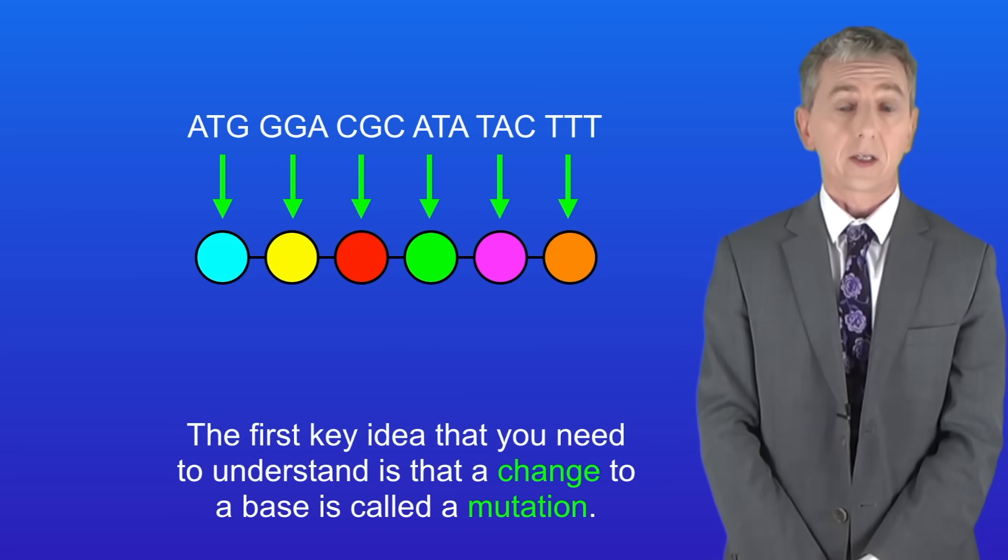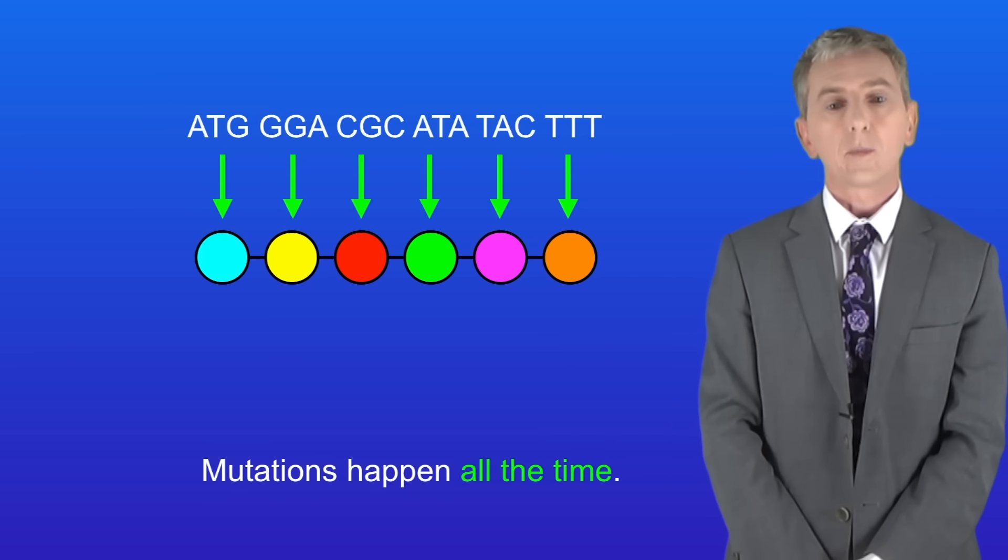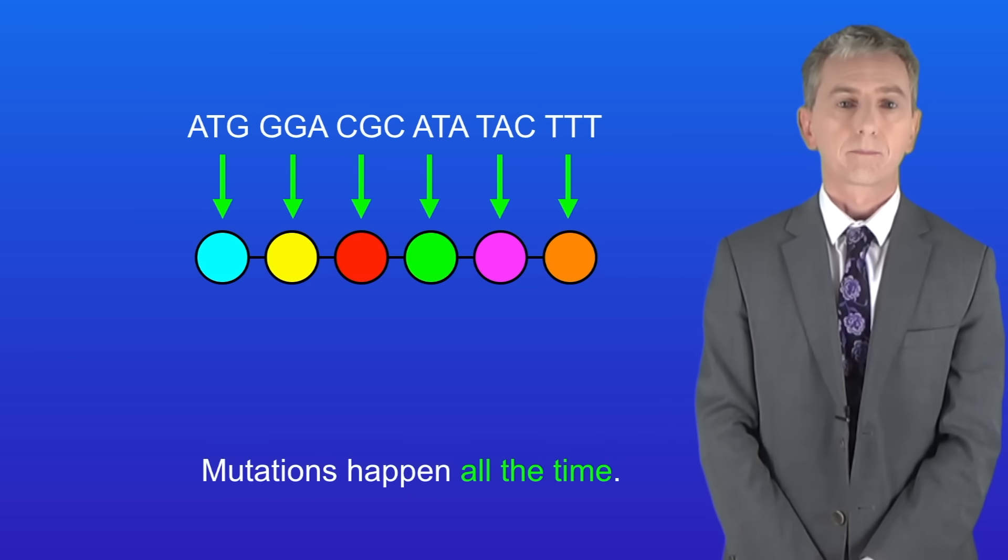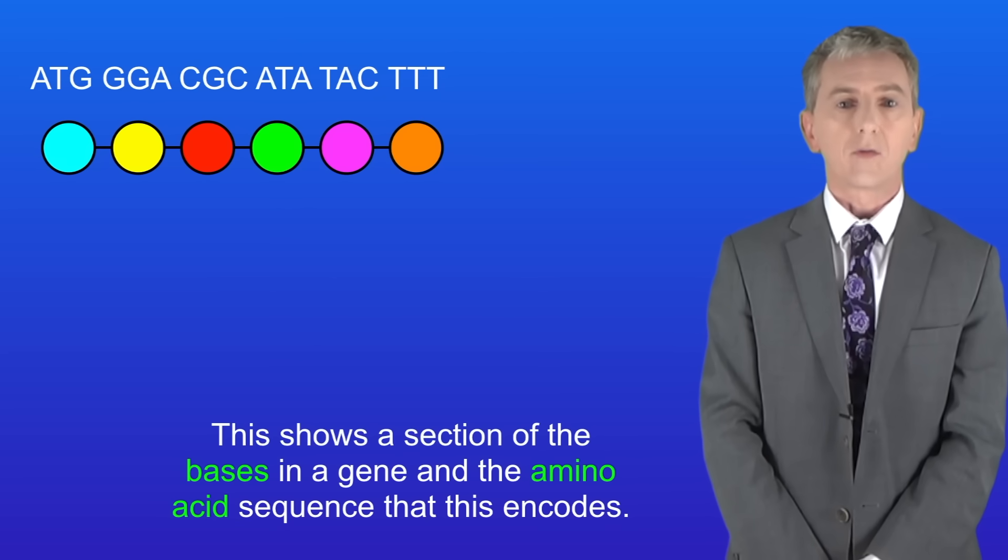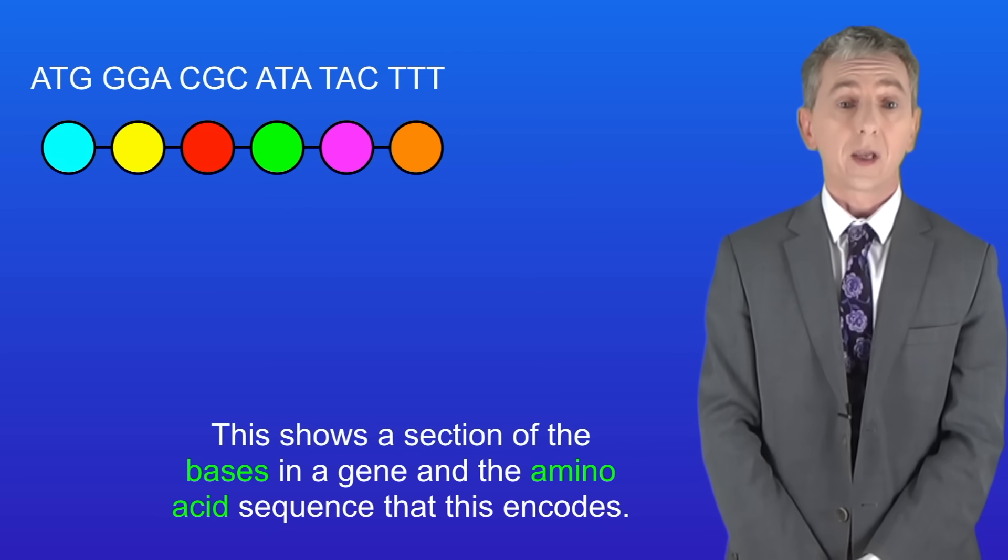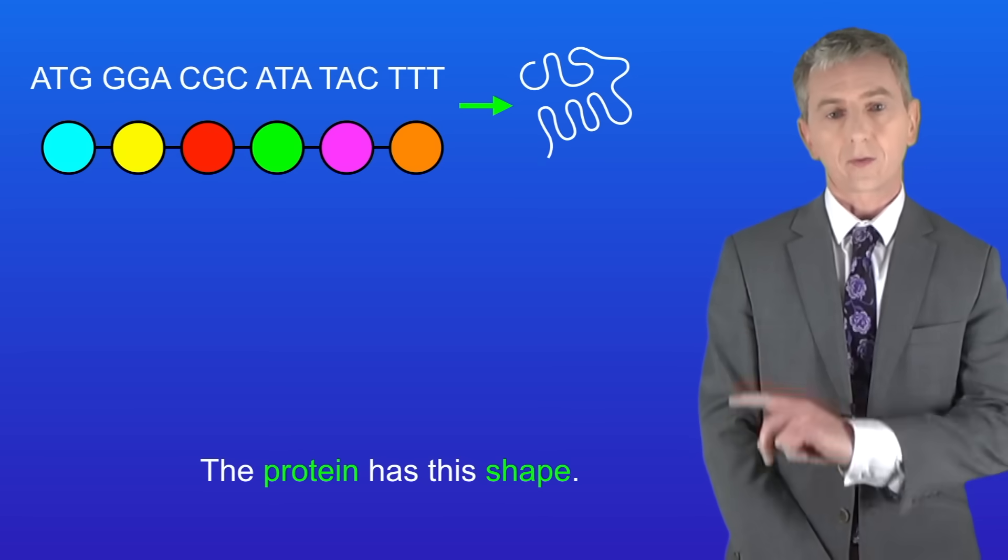The first key idea you need to understand is that a change to a base is called a mutation, and mutations happen all the time. I'm showing you here a section of the bases in a gene and the amino acid sequence that this encodes. The protein has this shape.